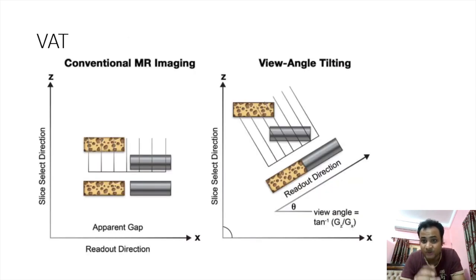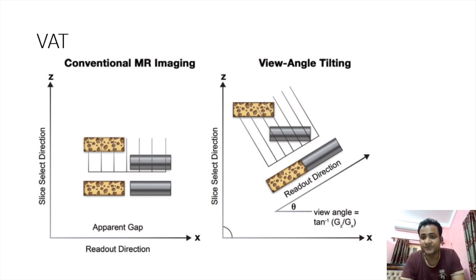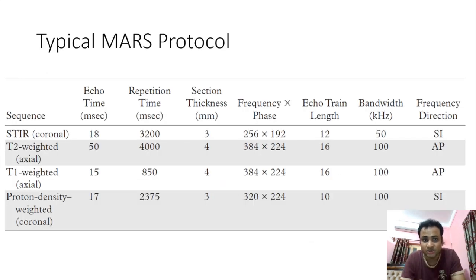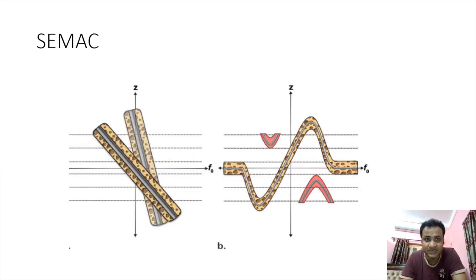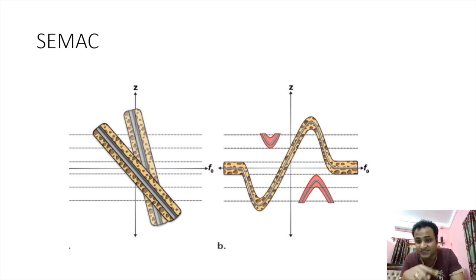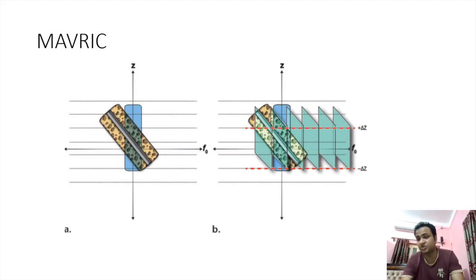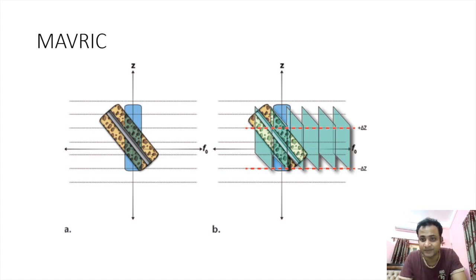There are special sequences for metal artifact reduction: VAT (View Angle Tilting), where the readout direction is altered so that view angle tilting helps reduce artifacts from metallic prostheses. MARS protocol provides an overall tabular representation of sequences and timings. SEMAC (Slice Encoding for Metal Artifact Correction) is another technique that changes the frequency encoding direction and alters the readout gradient to reduce artifacts. MAVERICK is a similar technique that reduces artifacts in the frequency encoding direction by providing repeated excitations read out rapidly.